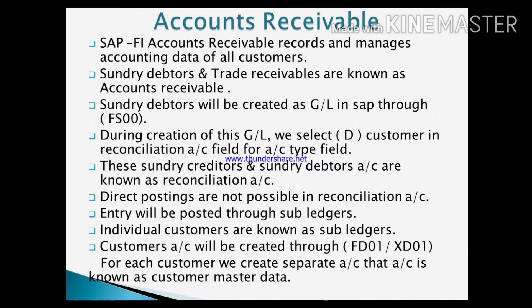Sundry debtors will be created as a GL in SAP through the T-code FS00. During creation of this GL, we will select 'default customers' in the reconciliation account field. These sundry debtors or sundry creditors are known as reconciliation accounts. Direct postings are not possible in a reconciliation account; entries will be posted through the sub-ledgers.